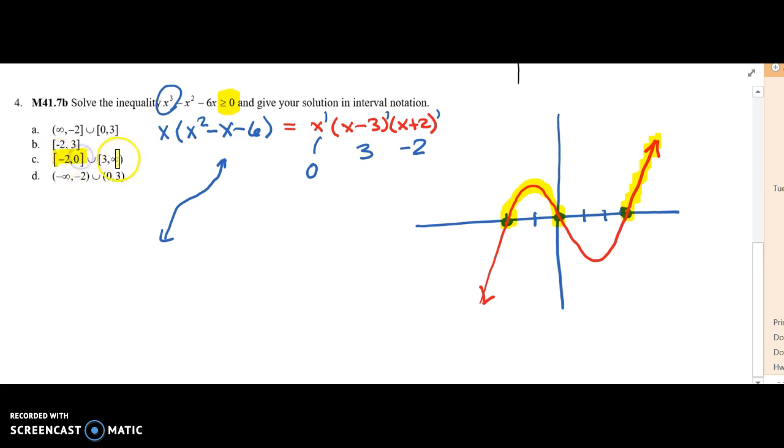Negative 2 to 0, and 3 to infinity. Because it was greater than or equal to 0, we include the dots.